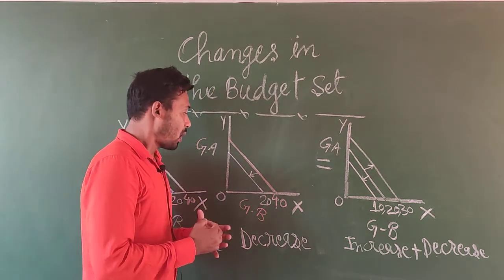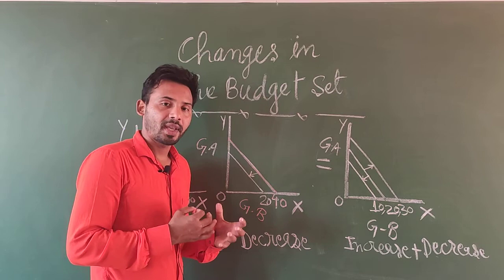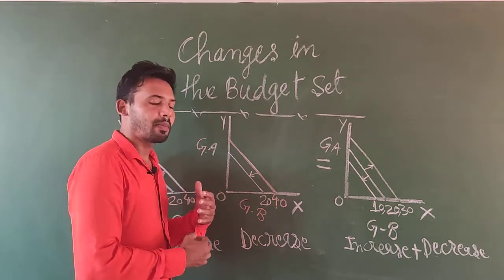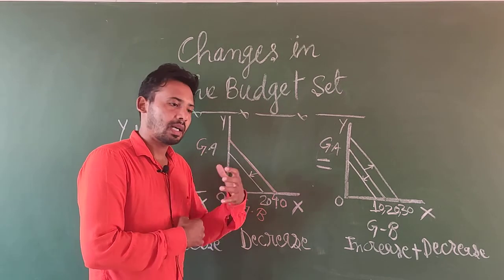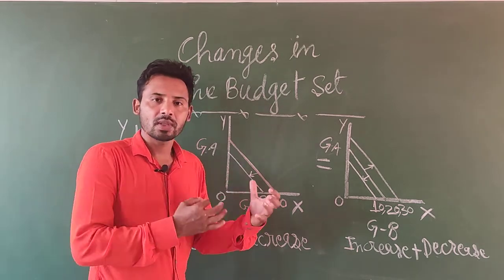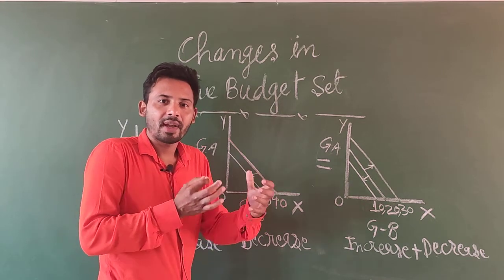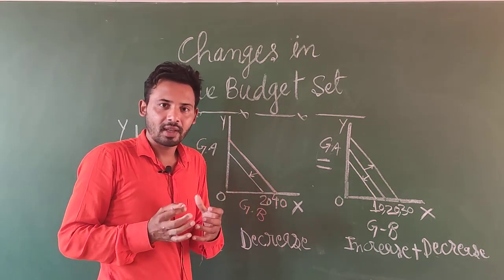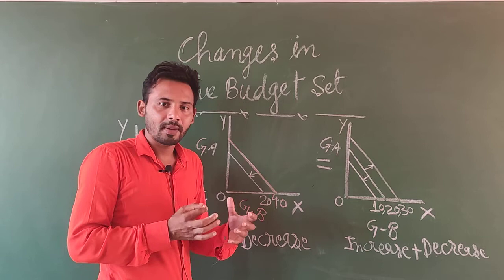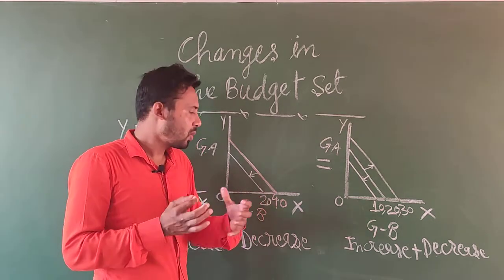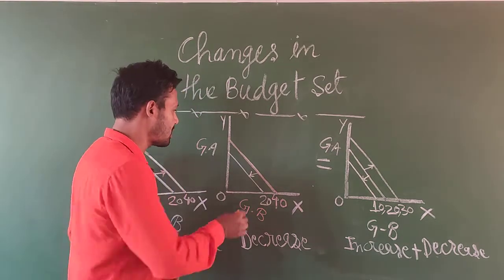Now suppose your 40 rupaiya kam kiya jata hai, 40 rupaiya se 20 rupaiya kam kar diya jata hai. Ya phir ho sakta hai hamaara jo pocket income hai, pocket money hai, woh every week 40 rupees hai, aur us me se 20 rupaiya is week ghata diya gaya hai. Toh us cheez ko hum kaise dikhayenge? Is tarah se.